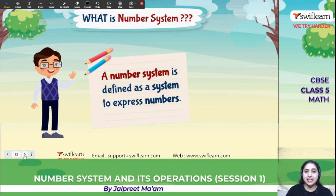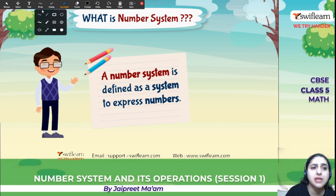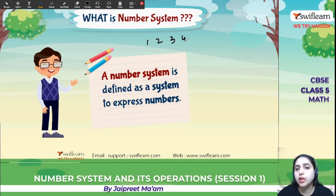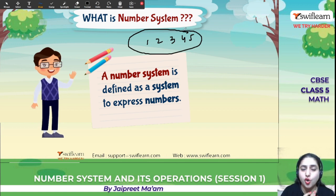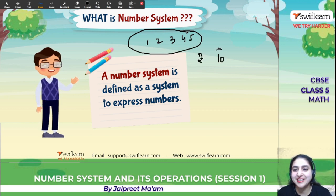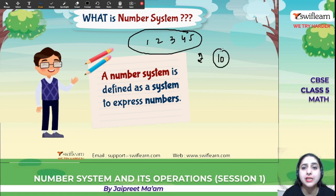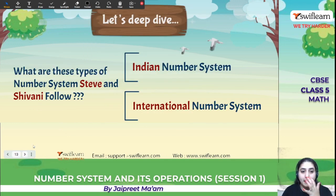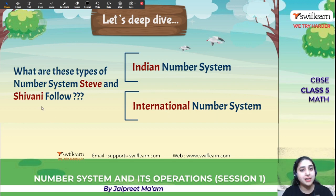So, what is a number system? A number system is defined as a system to express numbers. Why do we need to express numbers? For example, if you go to buy a notebook that costs rupees 10, how will you know it's 10? That's why we have a number system. We have two types: the Indian number system and the international number system — which Steve and Shivani follow respectively.